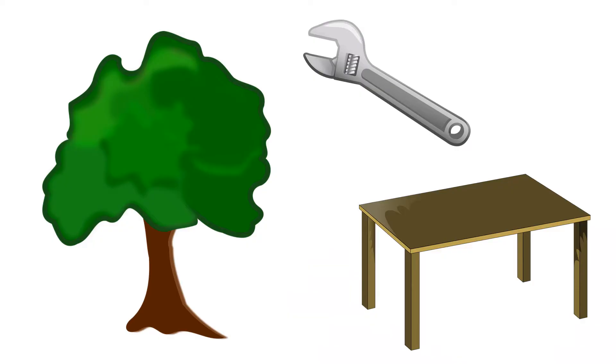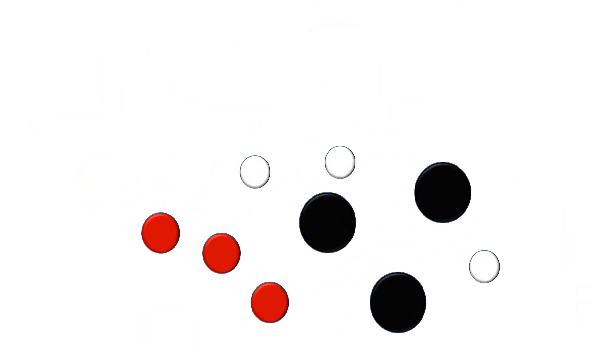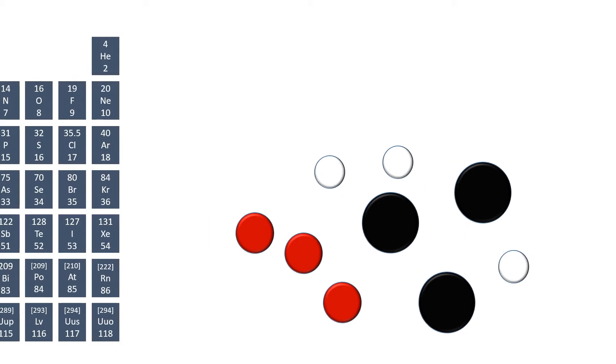All substances are made of atoms. An atom is the smallest part of an element that can exist. There are about a hundred different elements and they're all shown in the periodic table.